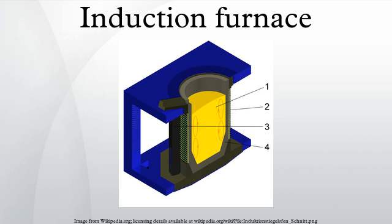In the coreless type, metal is placed in a crucible surrounded by a water-cooled alternating current solenoid coil. A channel-type induction furnace has a loop of molten metal, which forms a single-turn secondary winding through an iron core.